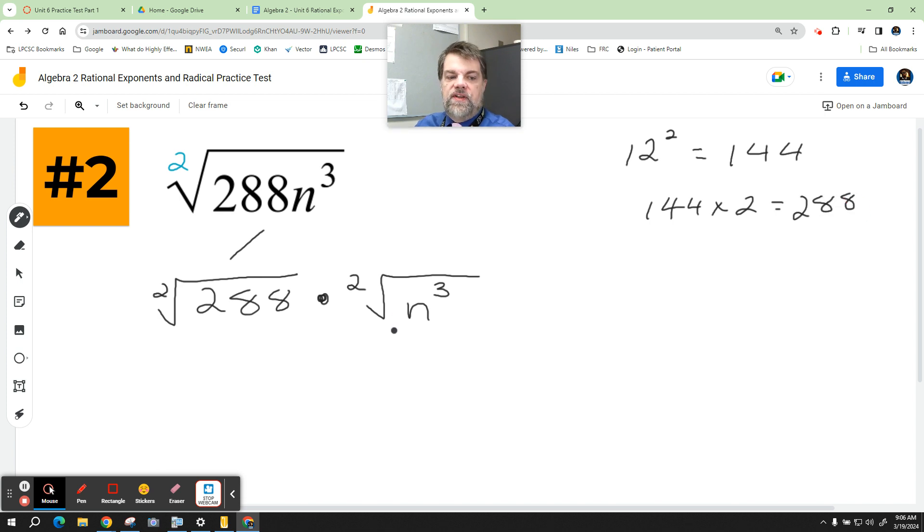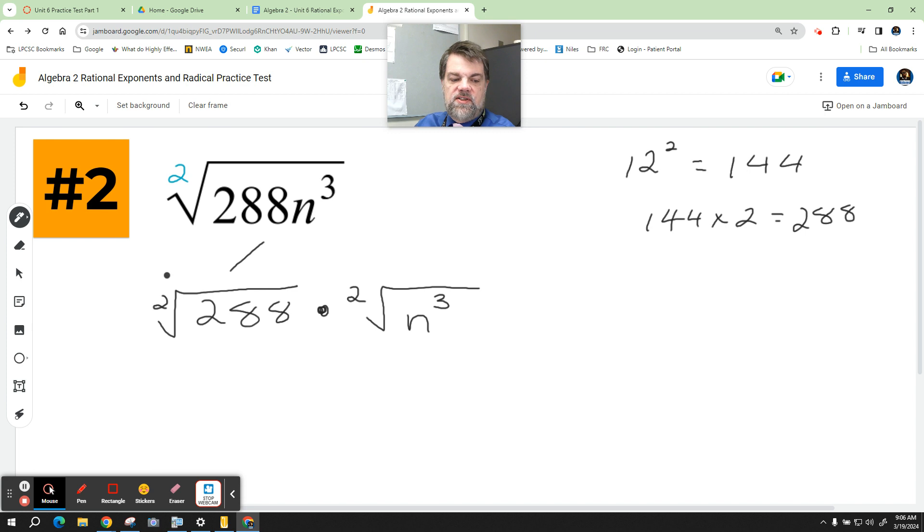Okay, so then what I'm going to do is I'm going to split this up even more. Also, if I say n to the third power, isn't that equal to n squared times n to the first power?